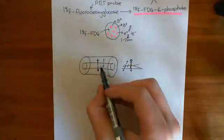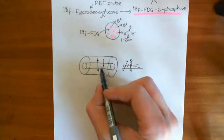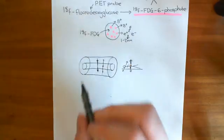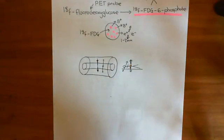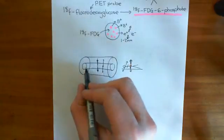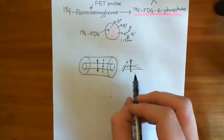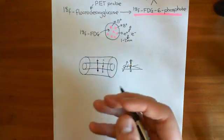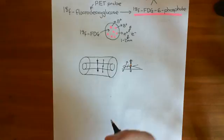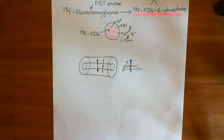And from that, you can work out exactly where the positron-electron annihilation occurred. Then what you can build up is a picture of the density of positron-electron annihilations throughout the body. And from that, you can infer the density of 18F-fluorodeoxyglucose, and from the density of 18F-fluorodeoxyglucose, you can infer how metabolically active each tissue is within the body.